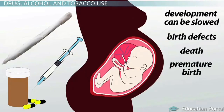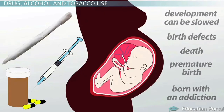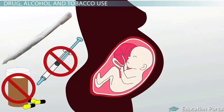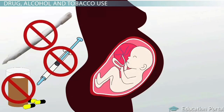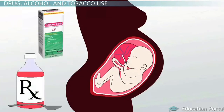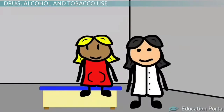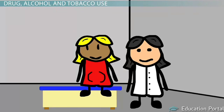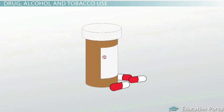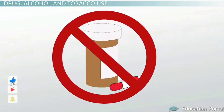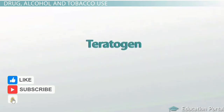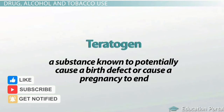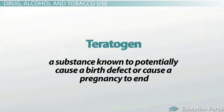A child can even be born with addiction. It may seem obvious that illegal drug use can be harmful to an unborn child, but store-bought or prescription medications can be a hazard as well. A caregiver can help determine whether the benefit of a medication is greater than the risk it may pose to the unborn child. The use of any medication that is a known teratogen should be avoided during pregnancy. A teratogen is a substance known to potentially cause a birth defect or cause a pregnancy to end.